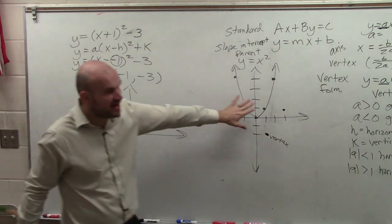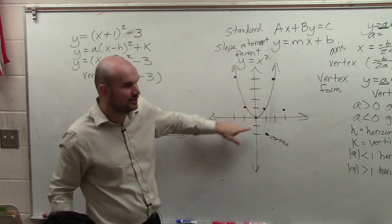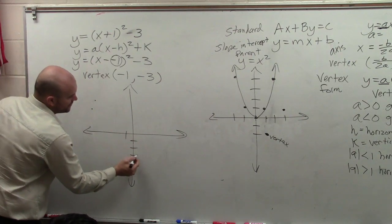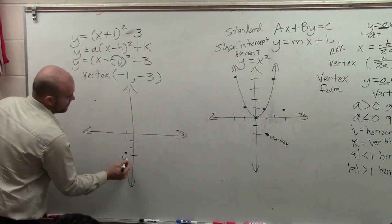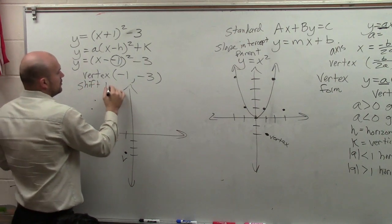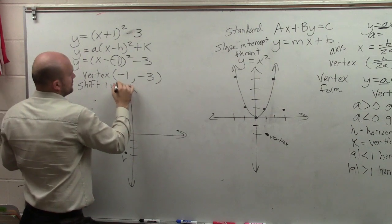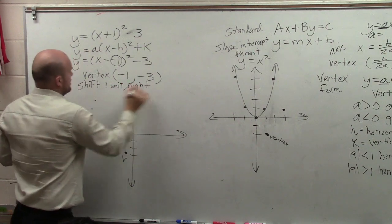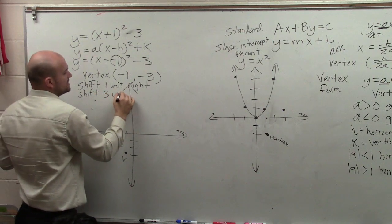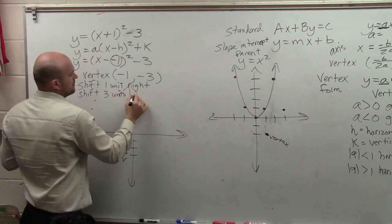So unlike my parent graph, my vertex is not at 0, 0. Now my vertex is at negative 1, negative 3. 1, 2, 3. So what has my graph done? It has shifted one unit to the right, and it has shifted three units down.